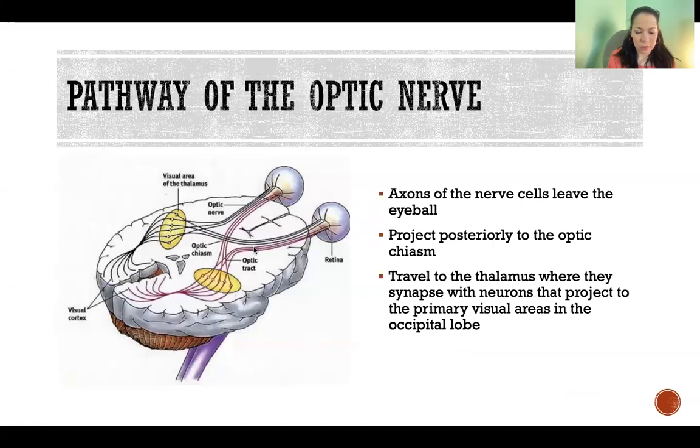which is this part in the center here where we see some crossing of axons. So I'll talk about that on the next slide. That is the optic chiasm. And then after we get to the optic chiasm, the axons continue. They travel to the thalamus.